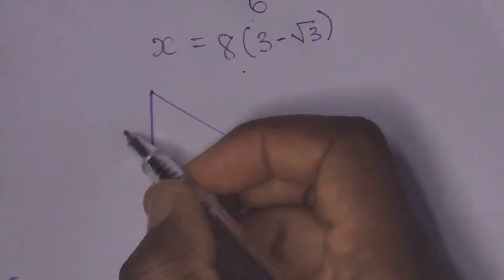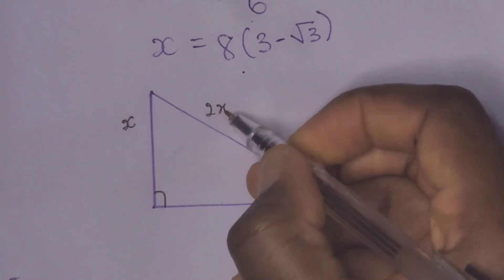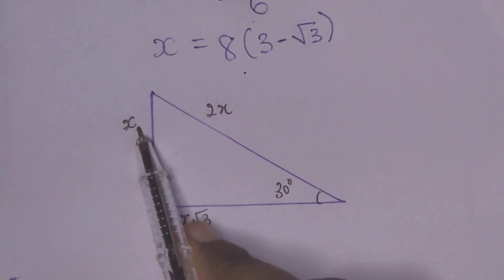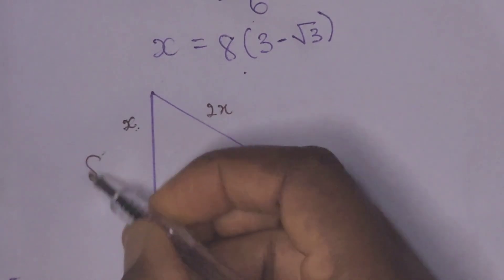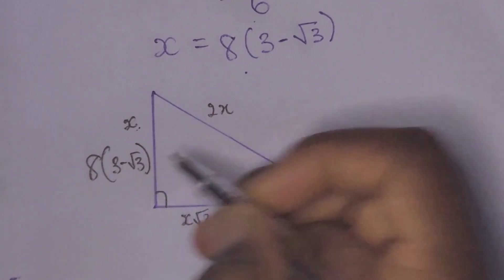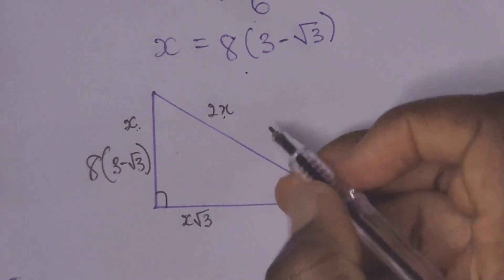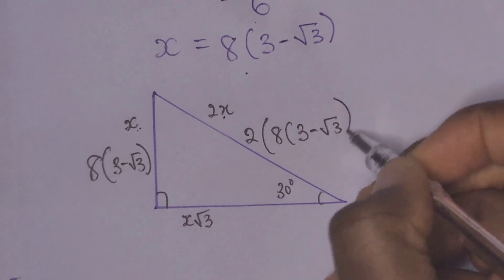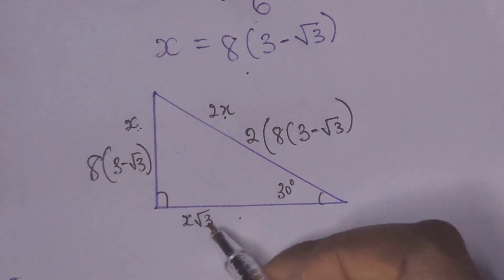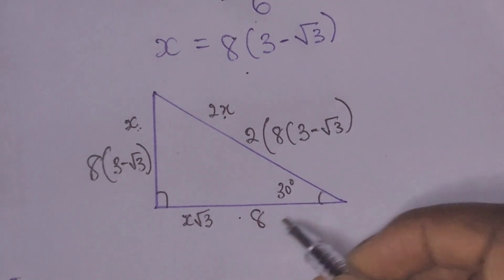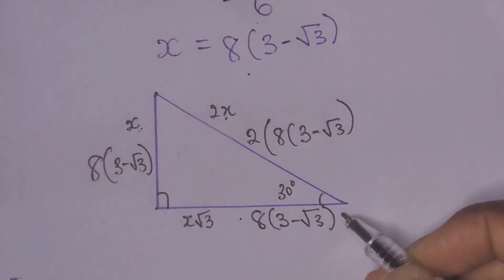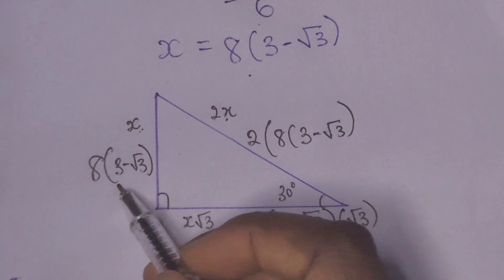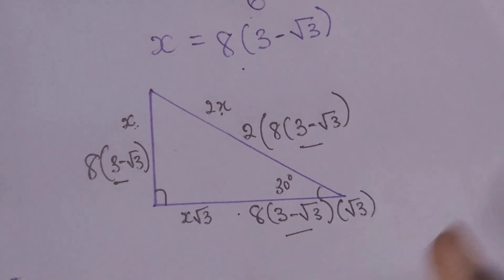Remember we named the opposite to be x, the hypotenuse to be 2x, and the adjacent to be x root 3. So if the opposite is x, it means the opposite is 8(3 minus root 3). The hypotenuse is 2x, so 2 times 8 times (3 minus root 3). And the adjacent is x root 3, so 8 times (3 minus root 3) times root 3. We will be using these values to determine the area of the triangle.